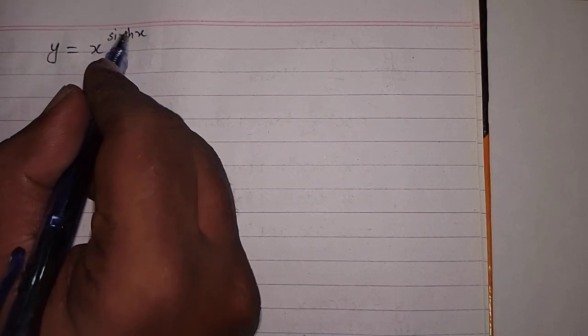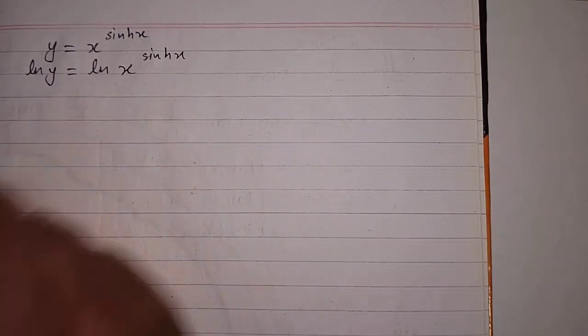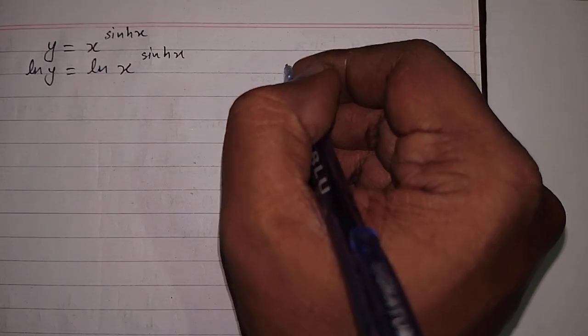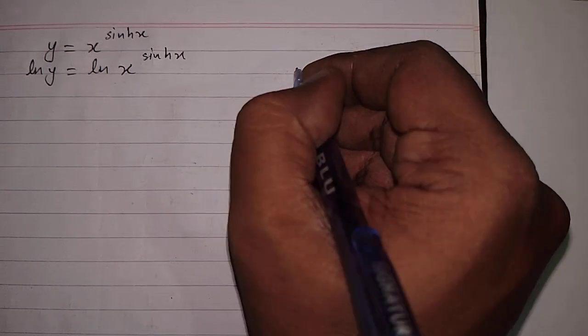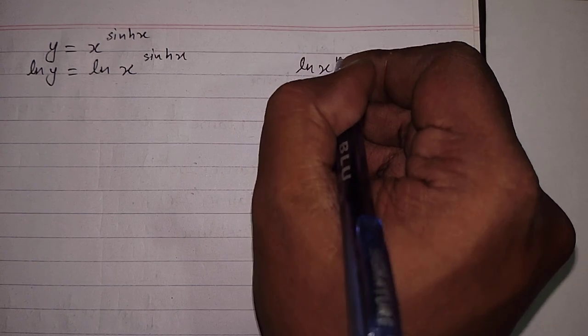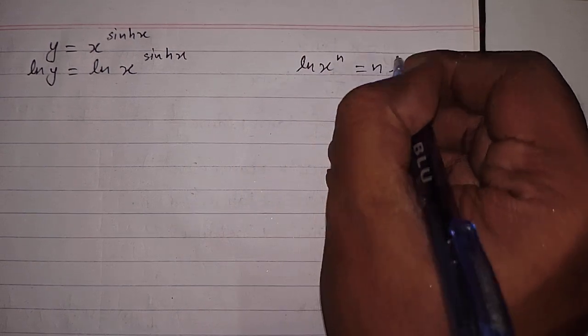In this video we will find the derivative of the function y equals x to the power hyperbolic sin x. First of all, we will take the natural log of both sides, which gives ln y equals ln of x to the power hyperbolic sin x, where ln is the natural log. Now we can apply the rule that ln of x to the power n equals n times ln x.